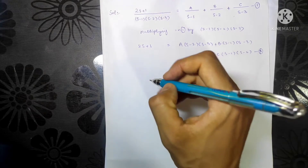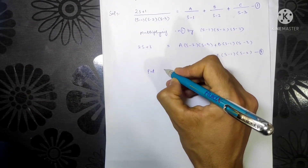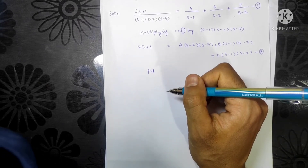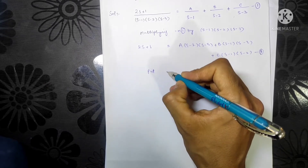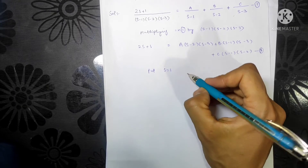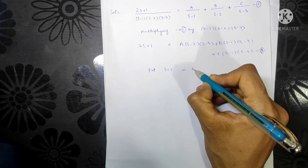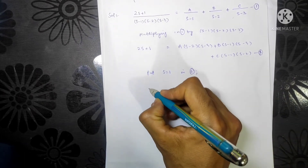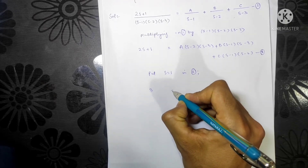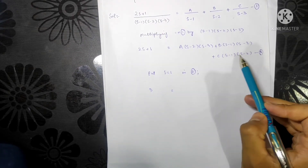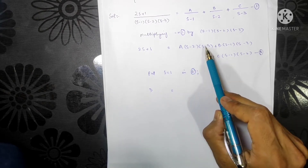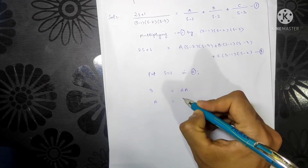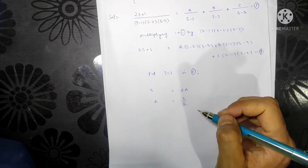So put s equal to 1 in Equation 2. The LHS becomes 2(1) + 1 = 3. The B and C terms become zero. We are left with A(1 minus 2)(1 minus 3) = A(-1)(-2) = 2A. So 3 = 2A, which gives A = 3/2.